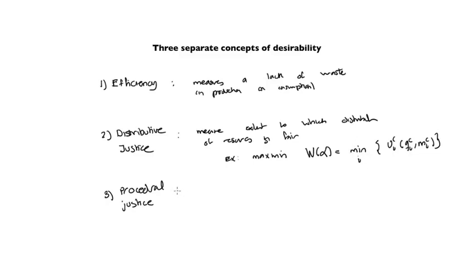Finally, there are notions of procedural justice which basically measure, or focus on measuring the extent to which the process used to reach the allocation is fair, is just, is fair.